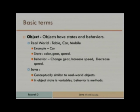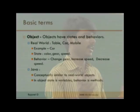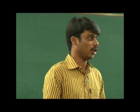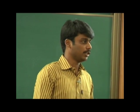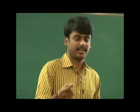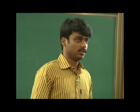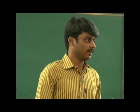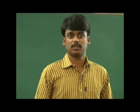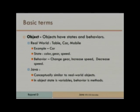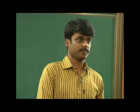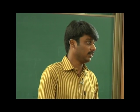Let me start with some basic terms we almost use in Java programming. First one is an object. What is an object? In real time, consider: everybody has a chair, pen, book, table, car — everything is an object. Each object has its own state as well as behavior. For example, if you take a camera, the camera has its own state: color, resolution, optical zoom. Behavior of a camera: click photo, take video, stop recording. Likewise, in Java the object has a state as well as behavior.